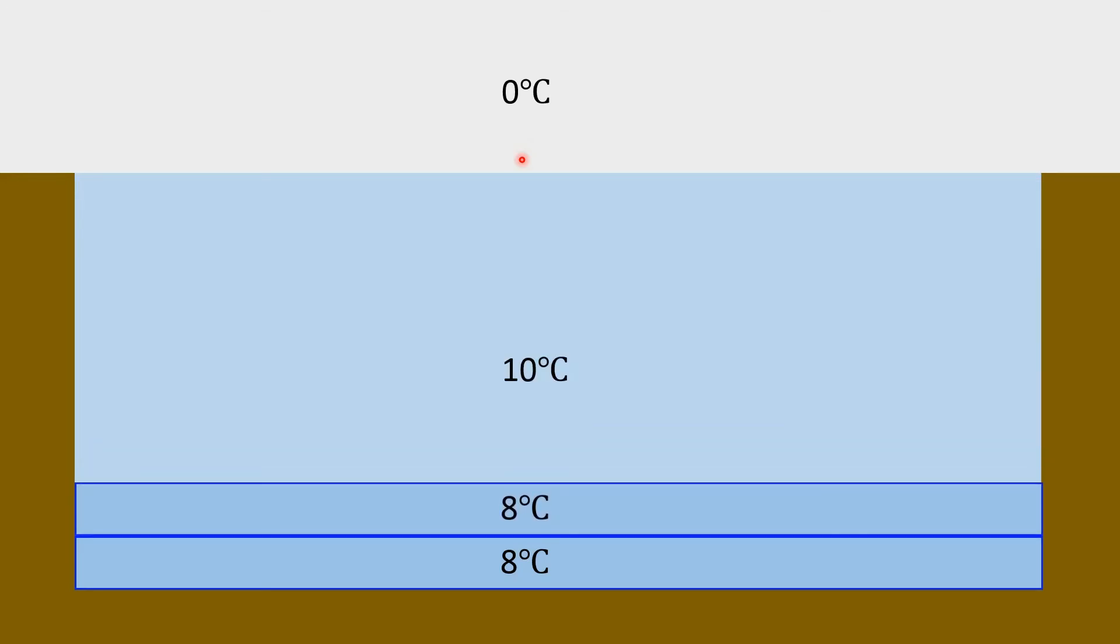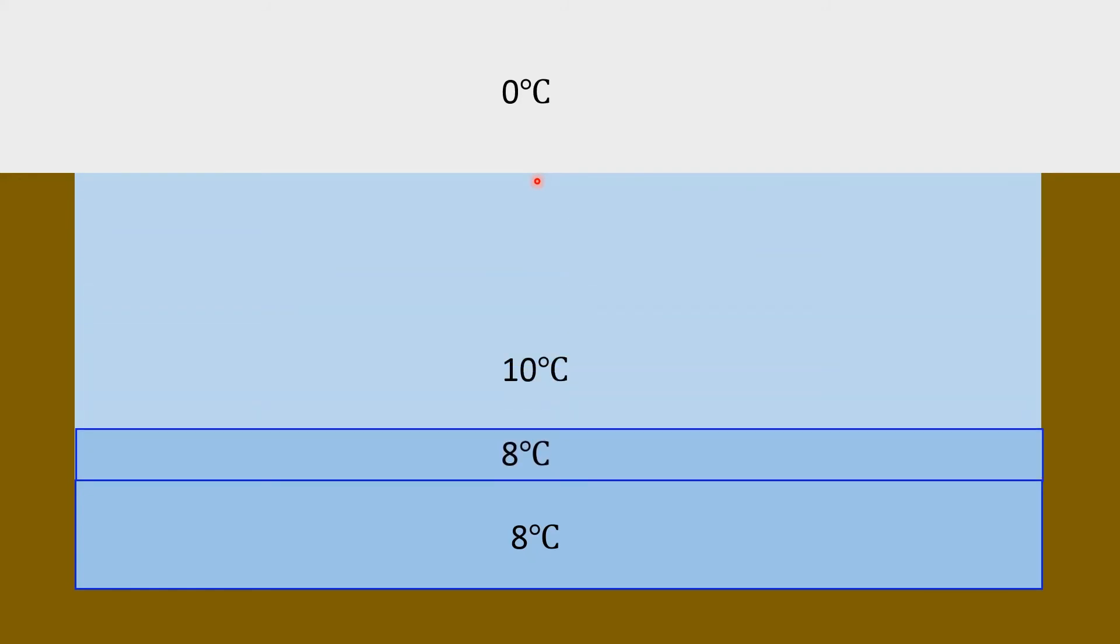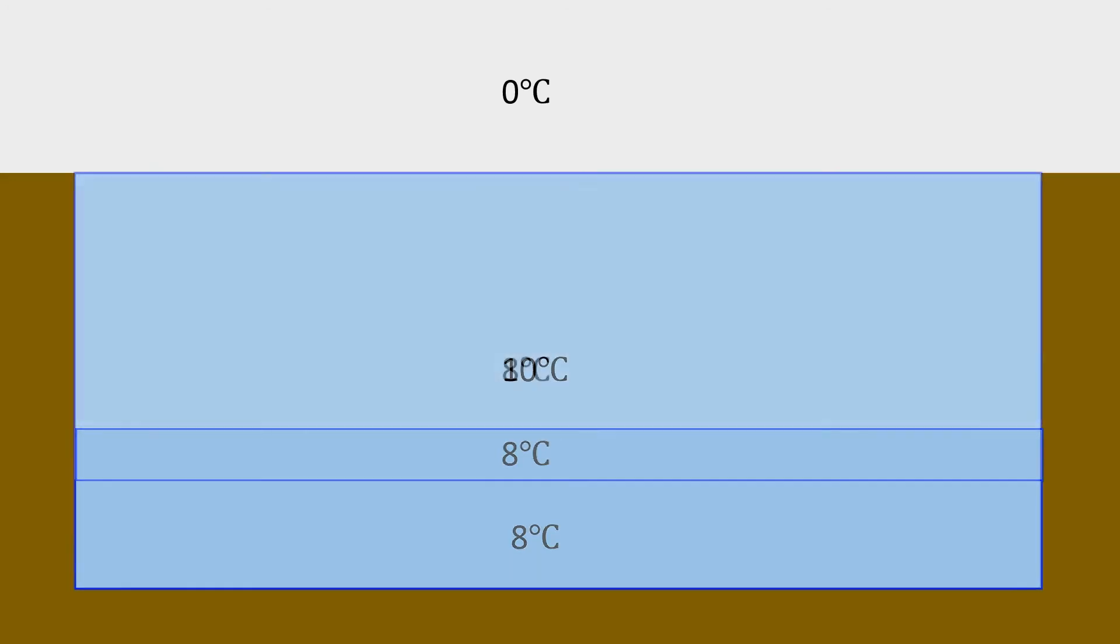Well now that this is on the bottom, that leaves 10 degree water on the top, which is again in contact with the air, and so it'll start to cool. So you're going to form another layer of cooler water, which becomes more dense, and again has less buoyancy, so that's going to sink. That leaves another exposed layer of 10 degrees Celsius, which is going to cool. Eventually that's going to drop. I think you're starting to see the pattern here. This is going to continue.